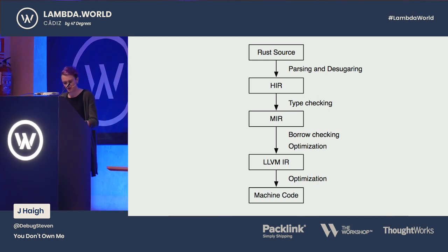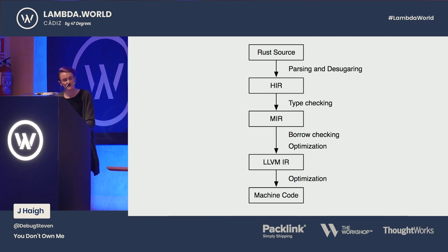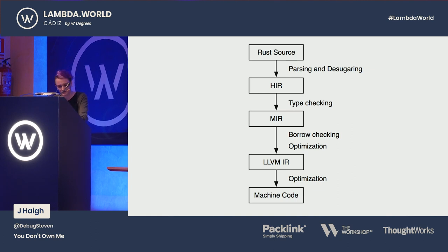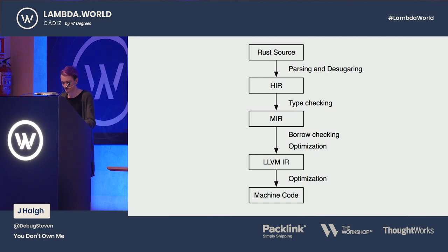There's also the drop checker, which determines the order that your resources should be dropped. Variables are dropped in the reverse order that you declare them, and fields are dropped recursively from the outermost type to the innermost type. The ownership model has been called a 'static garbage collector' by Steve Klabnik. Garbage collection usually happens at runtime, but here Rust code is first parsed and desugared into a higher-level intermediate representation. Type checking happens on that HIR to get a middle intermediate representation, and then the borrow checker and drop checker analyze that MIR before optimization and LLVM code generation.